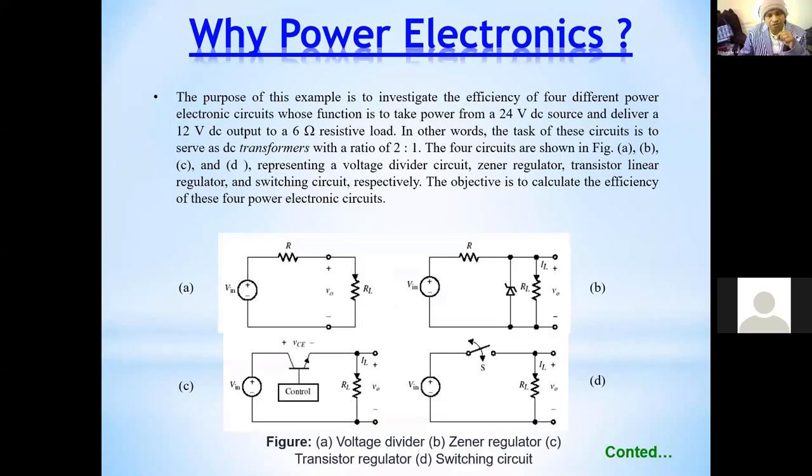For example, why we need a controlled circuit like power electronics? Each power electronic component is acting like a switch, on and off. I have given here four circuits that do step-down voltage. The first circuit is a voltage divider. So you feed the voltage, this voltage is divided between R and RL. Output voltage is always less than the input voltage.